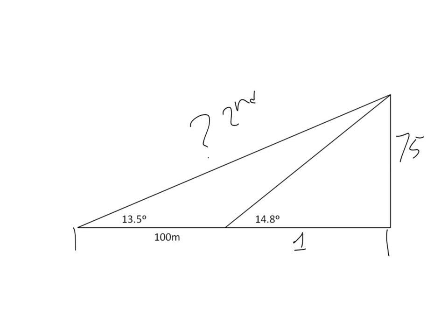All right, first we're going to have to use tangent, because we're using our adjacent and our hypotenuse. So the tangent of 14.8 is equal to our opposite 75.